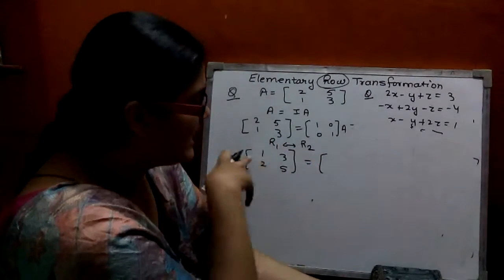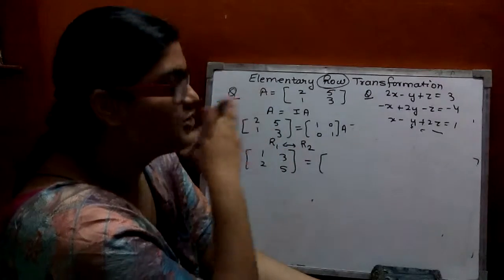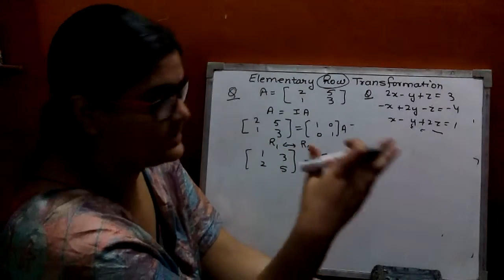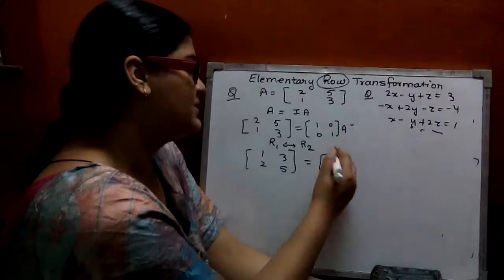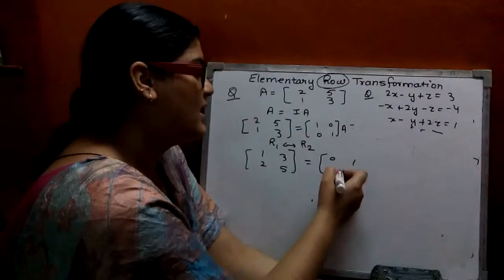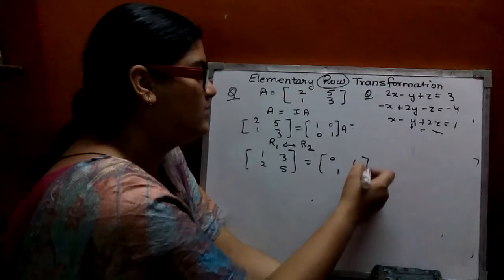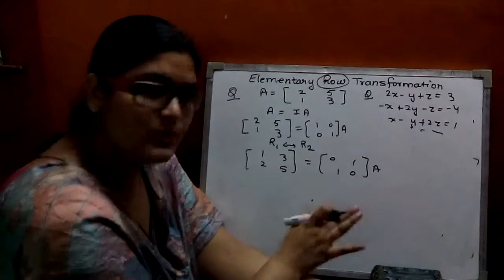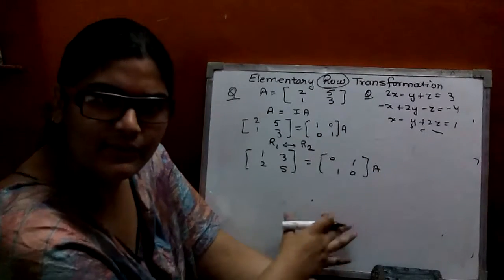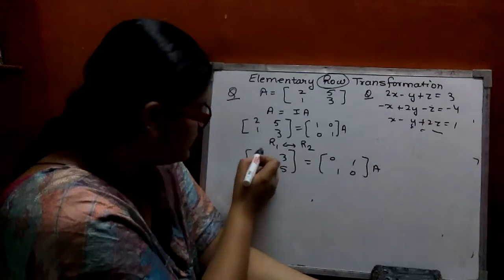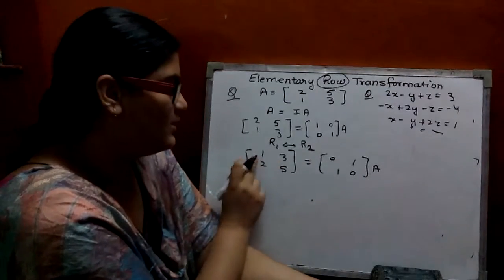You have to apply this transformation on both LHS and RHS — left side and right side. On the right side you get [0, 1; 1, 0] after the row interchange. We do this so that we can make 1 here to begin forming the identity matrix.